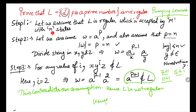This contradicts our assumption, hence L is not regular — hence proved. This is essentially the same as the a^n example which is easy to solve. We could also solve it by taking specific examples like a^5 or a^11, but it is always better to solve pumping lemma examples using the generalized string given in the language. Thank you for watching this video.